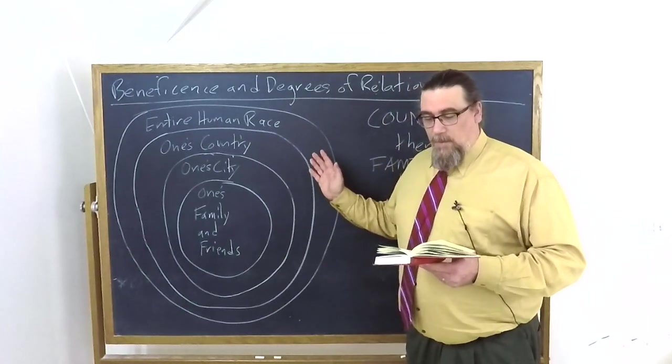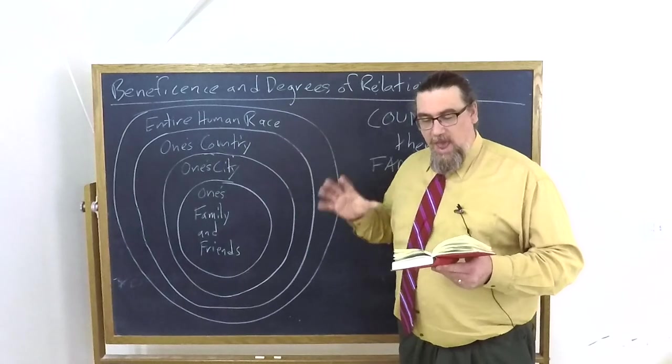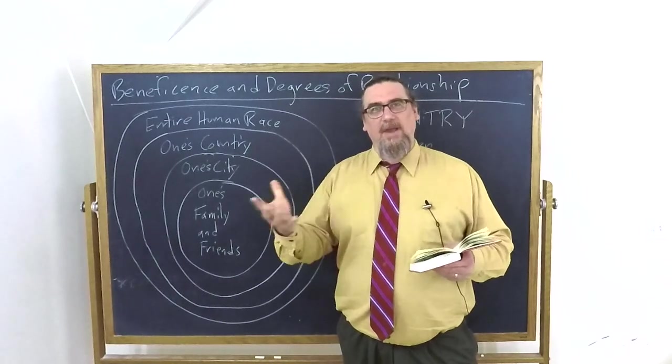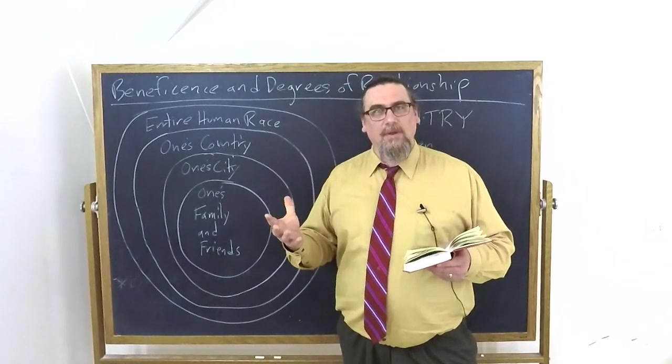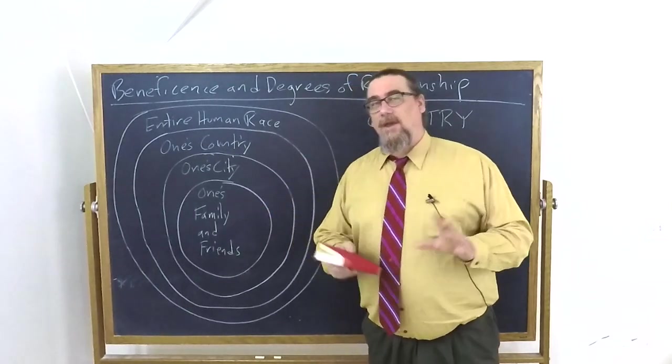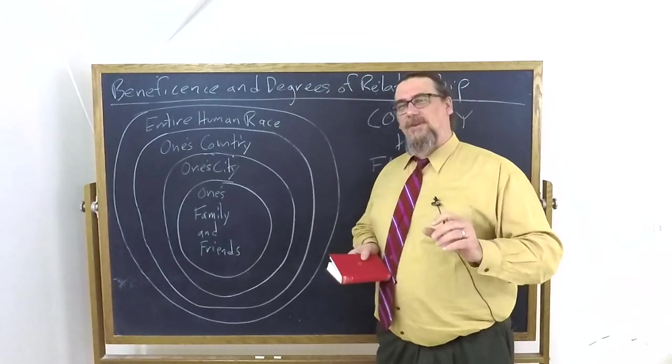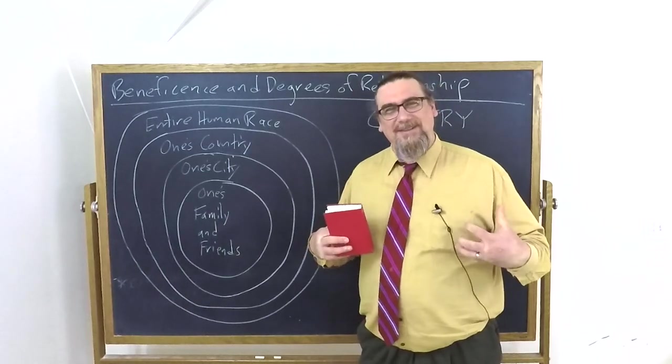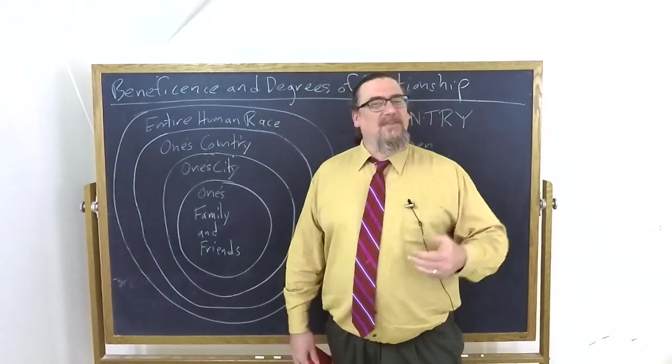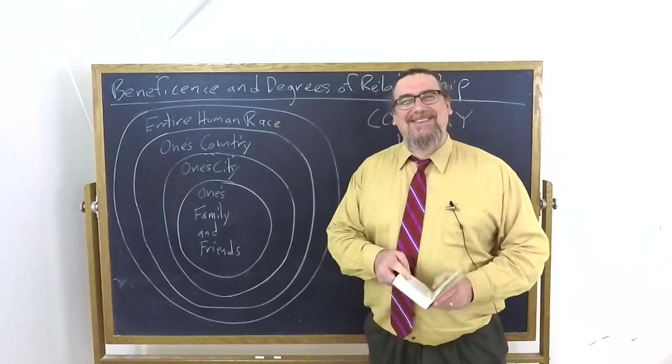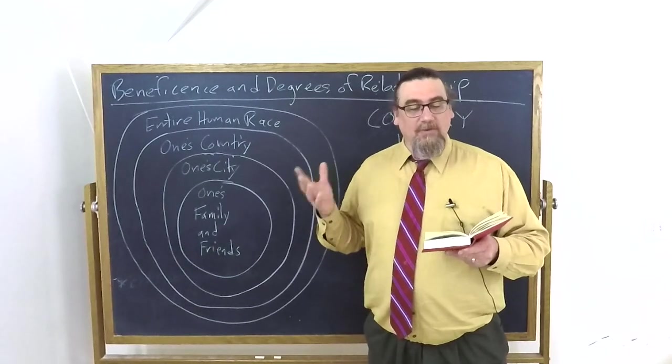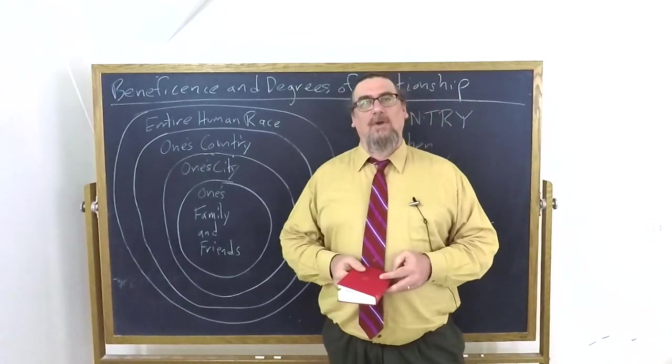Then he says, oh, before we go on, he says the people living in the same community have many things in common. He says they have a common forum. That is a legal place to gather, common temples, ways of worshiping the divine, common colonnades. Interesting. Now we're getting to things where the city or private citizens have established them, and we feel that they're ours, right? They feel like they belong to us, like a sports stadium might be this way, or a common television or radio station, any of these sorts of things. Streets, statutes, laws, courts, rights of suffrage, to say nothing of social and friendly circles and diverse business relations with many. This is a much closer set of relations than at the level of the country.